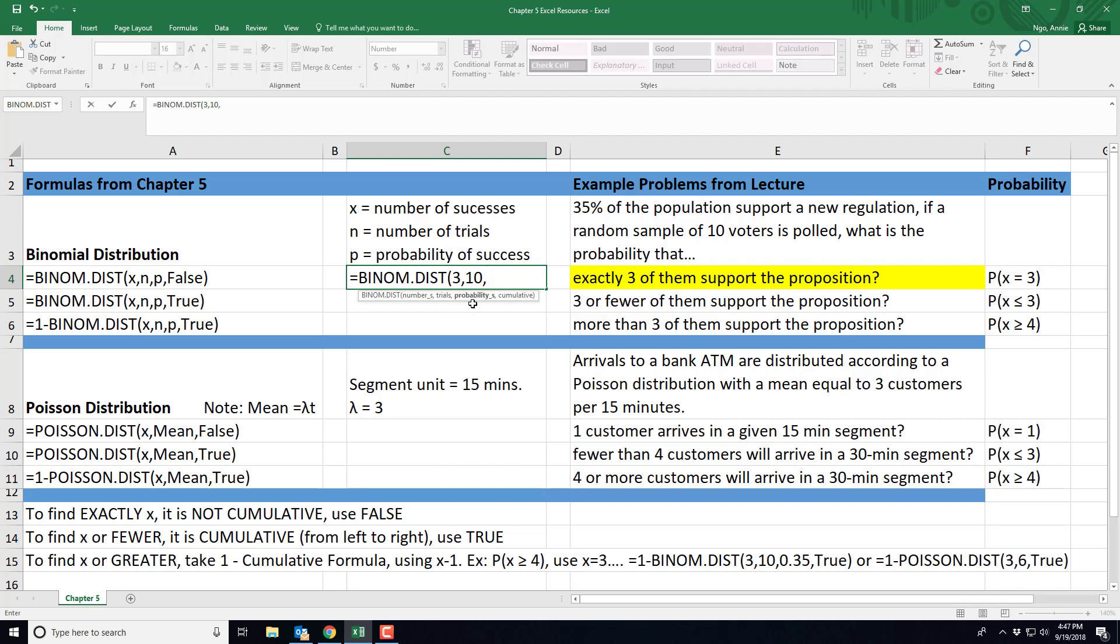Type in a comma. Here is the probability of success and that's given to us at 35% or 0.35.